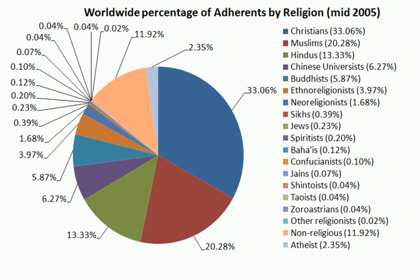The Harappan people of the Indus Valley Civilization, which lasted from 3300 to 1300 BCE with a mature period of 2600–1900 BCE, had an early urbanized culture which predates the Vedic religion. The documented history of Indian religions begins with the historical Vedic religion, the religious practices of the early Indo-Iranians, which were collected and later redacted into the Vedas.